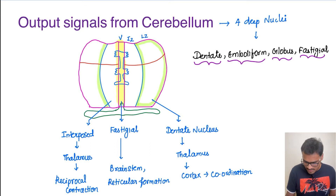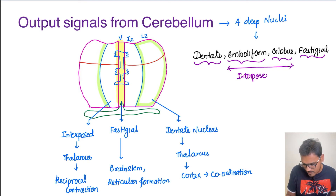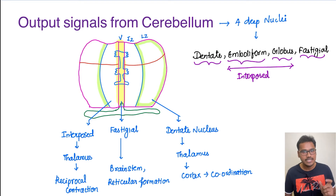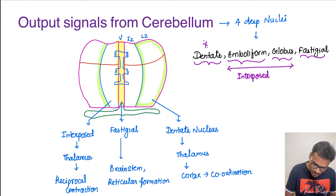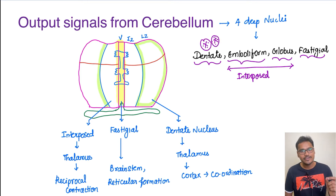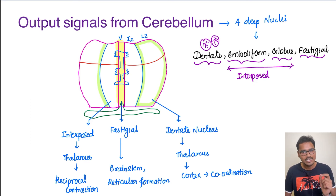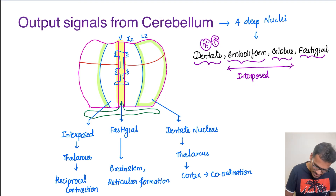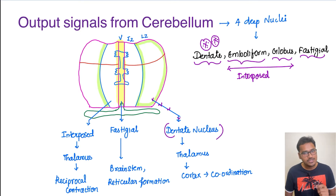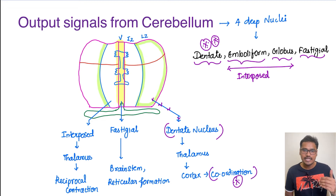The interposed nucleus lies between the dentate and fastigial nuclei. All these nuclei carry information from the cerebellum to other areas. The dentate is the most important, corresponding to the lateral zone. From the lateral zone, information is carried by the dentate nucleus to the thalamus, and finally this information reaches the cortex, so that coordination with the cortex can be done instantaneously.